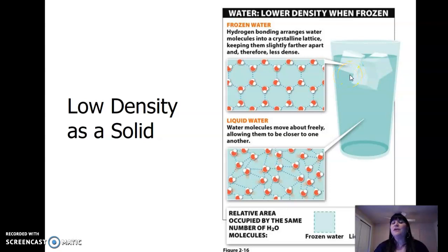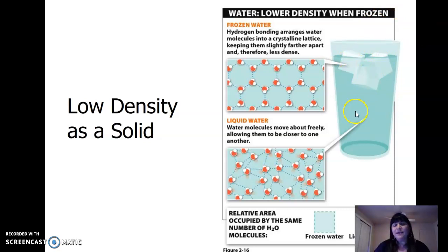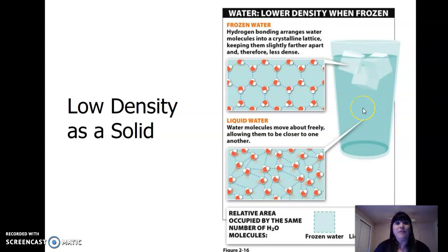Think of large bodies of water. When it gets really cold, the ice will float to the top and the liquid water will be on the bottom, which is good because the fish and all the living organisms will not freeze to death. So low density as a solid is an important property of water.